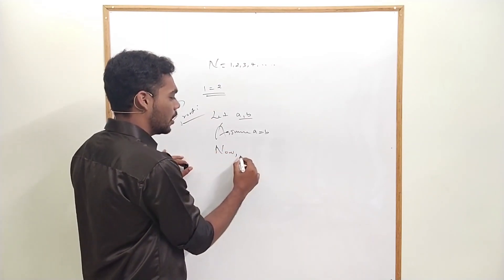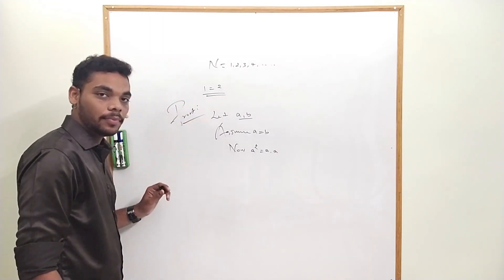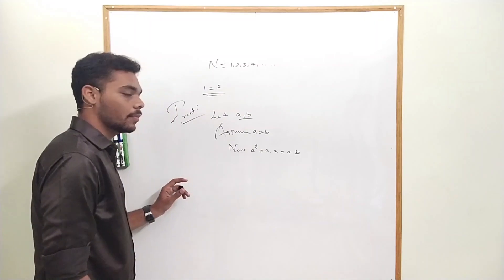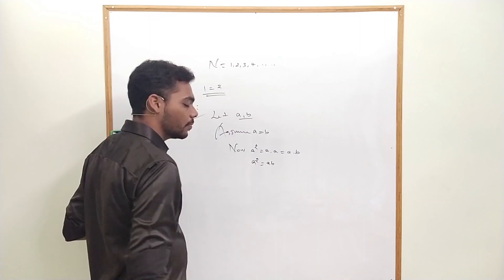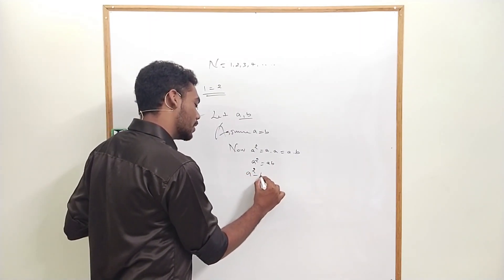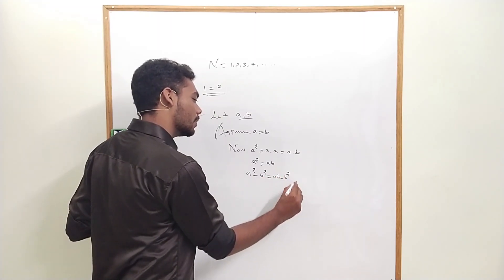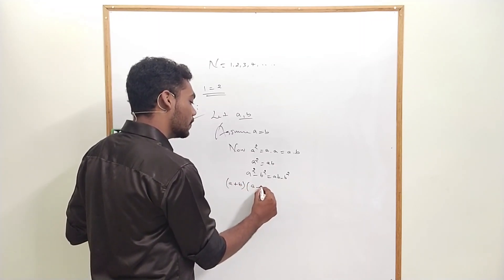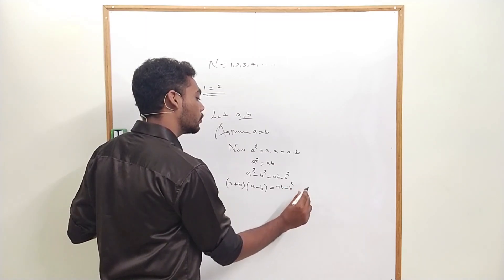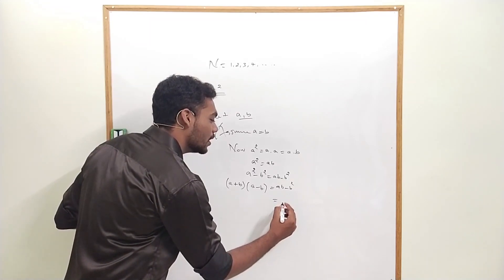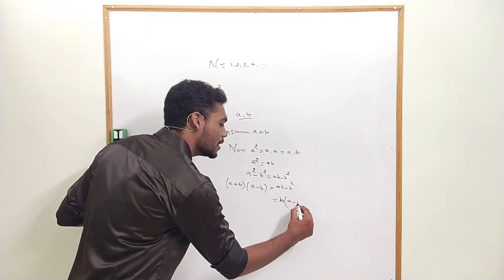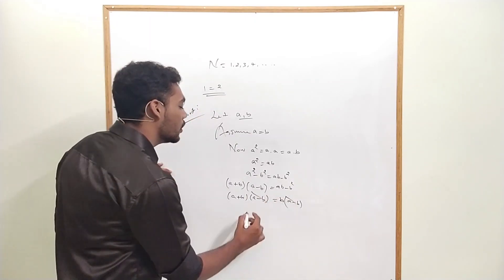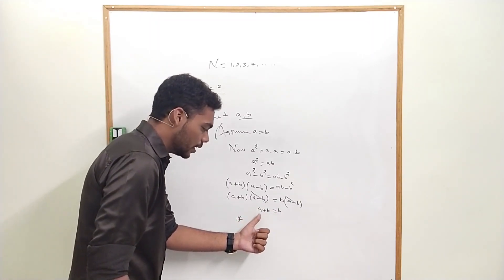Since A equals B: A square equals A into A, which equals A into B. So A square equals AB. Now subtract B square from both sides: A square minus B square equals AB minus B square. Factoring: A plus B into A minus B equals B times A minus B. Cancelling A minus B from both sides gives A plus B equals B.